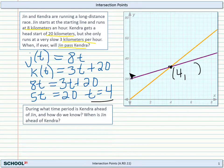Because the y-axis here is distance, and this is time. So when the purple line is greater than the orange line is when Jin is ahead of Kendra. And then when the orange line is ahead of the purple line is when Kendra is ahead of Jin.